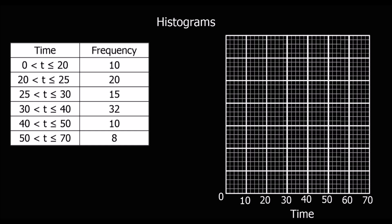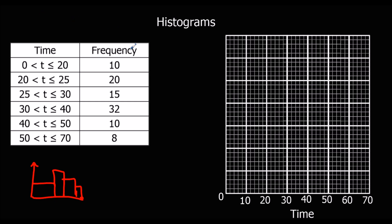We're going to draw a histogram now. A histogram - some people say it's like a bar chart - but what a histogram looks like, it's got bars of different widths, so you get some bars that are skinnier than other bars. The thing with a histogram, the frequency - so how many people - the frequency is proportional to the area, so the frequency equals the area.